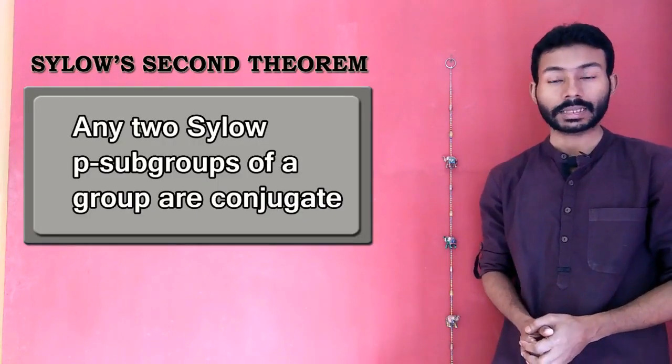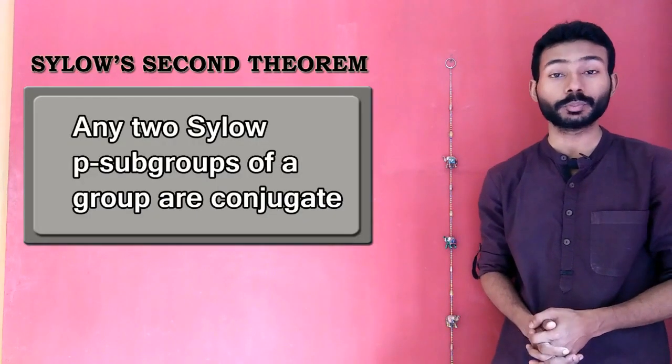Sylow's second theorem tells us that any two Sylow-P subgroups of a group are conjugate.